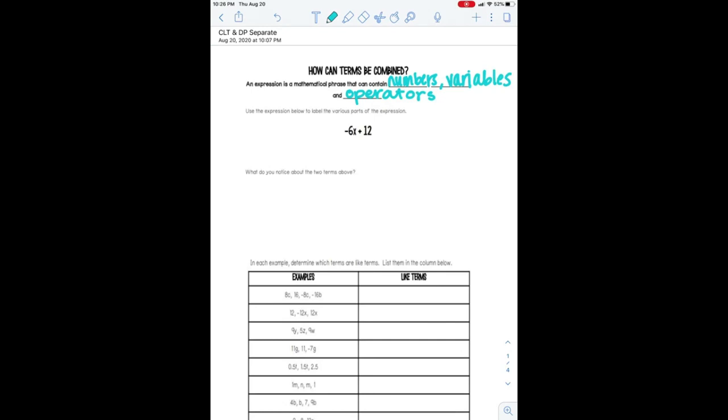Okay, and this 12 right here, that's obviously a number, but I want us to get in the habit of calling that a constant. So anything that's added or subtracted in an expression without a variable attached to it is a constant. Okay, so any number without a variable is a constant.